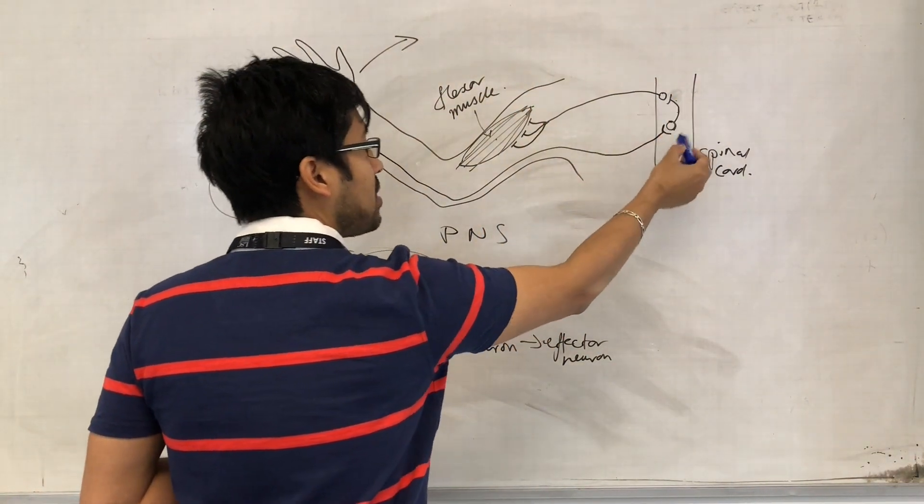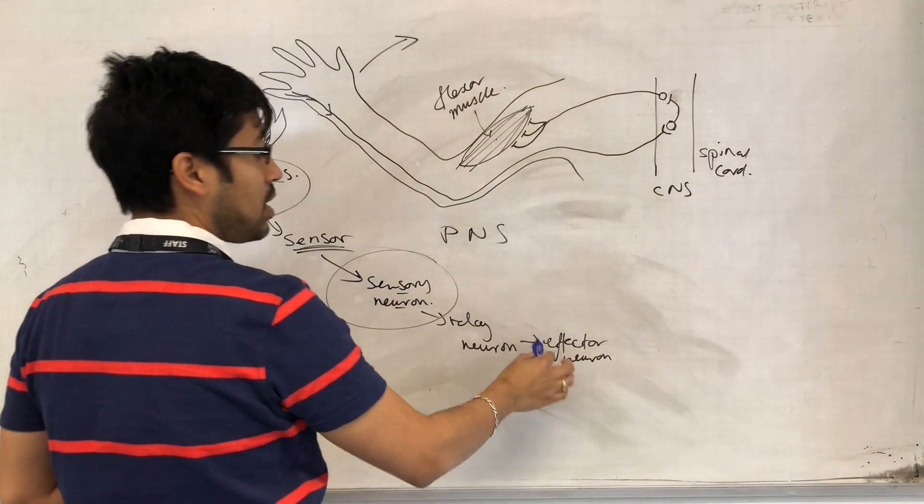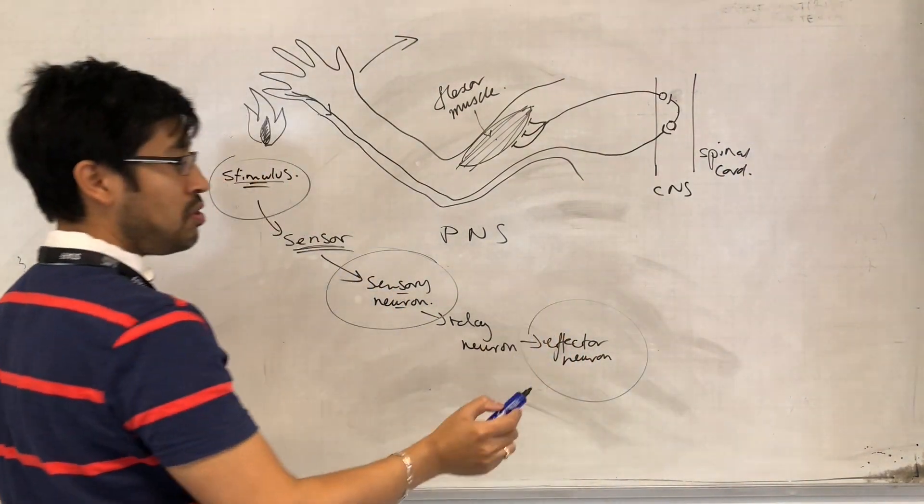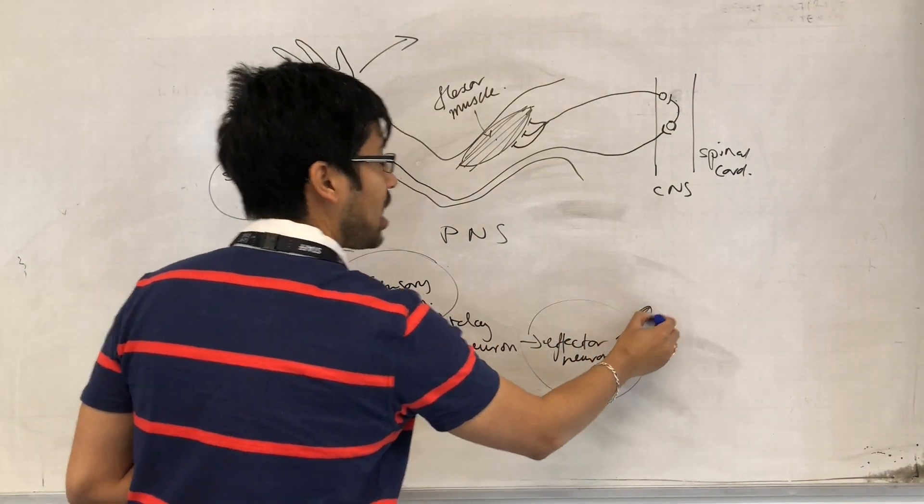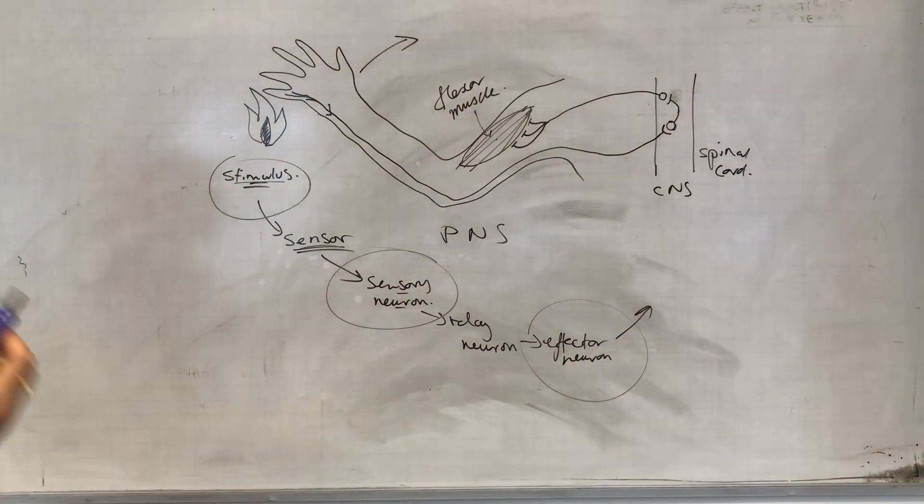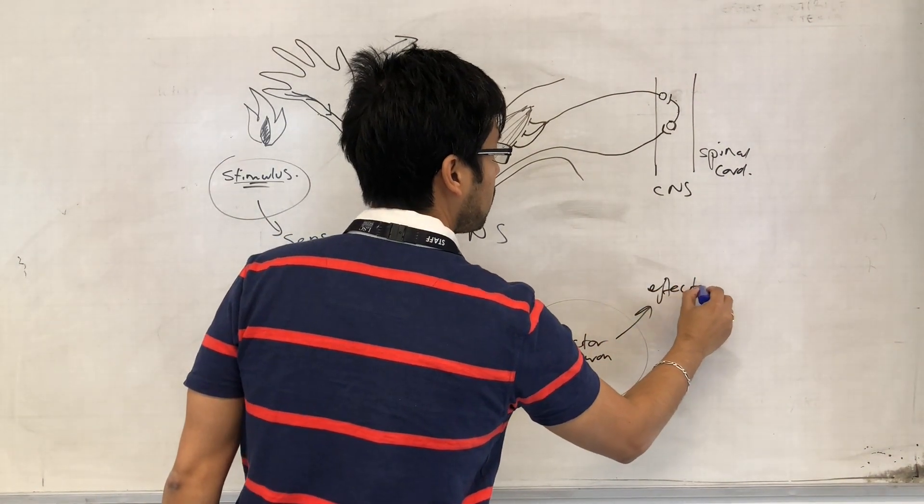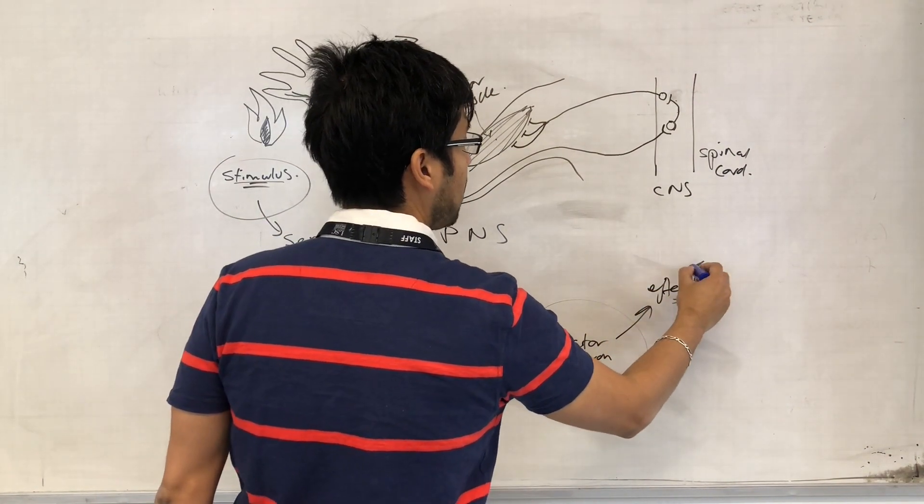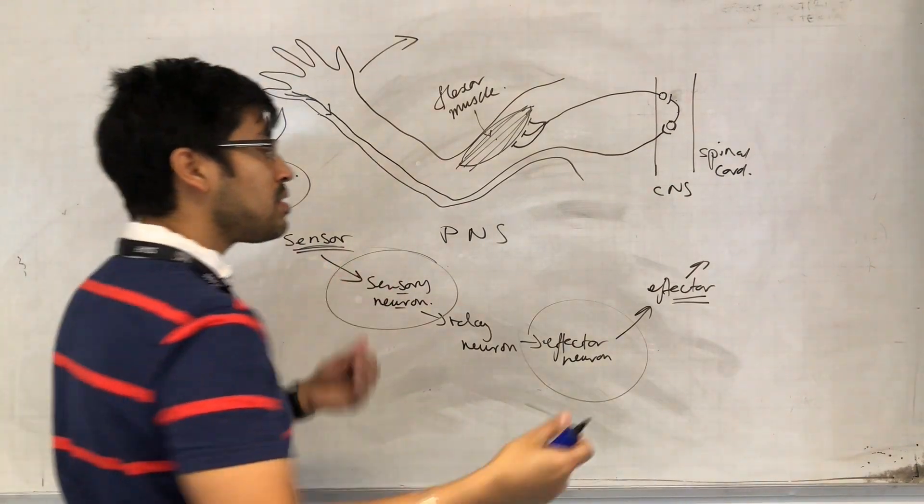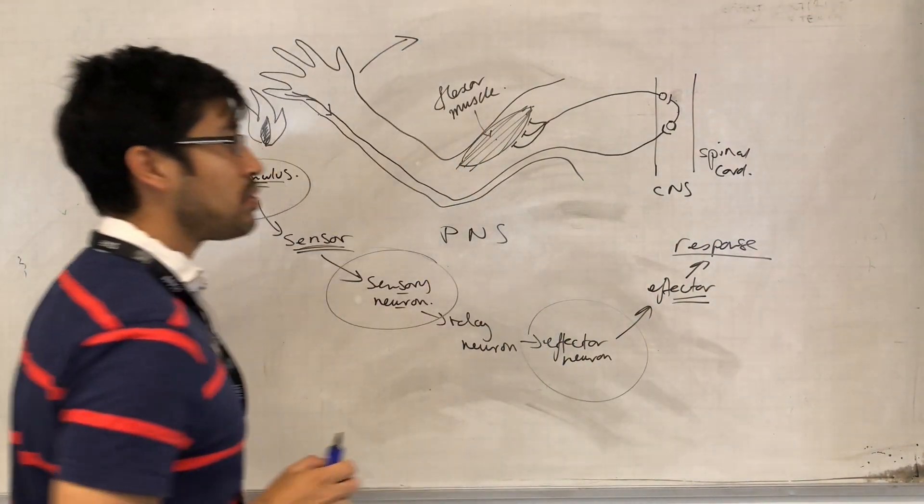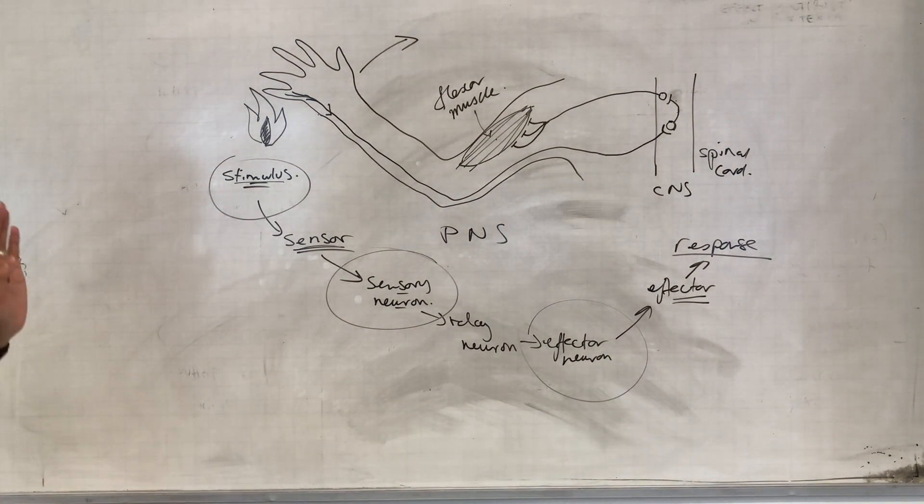But the relay neuron in the central nervous system then generates an impulse in the effector neuron. And the effector neuron is directly hooked up to an effector. In this case, the effector is muscle. But it's the effector that does whatever it does and makes a response. So that's your basic reflex.